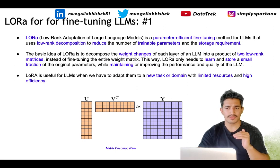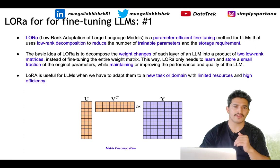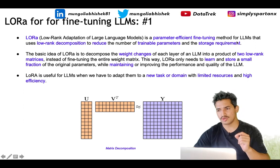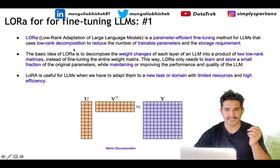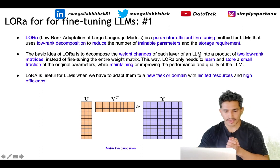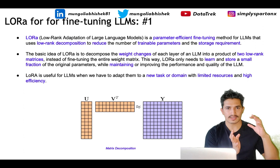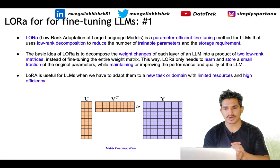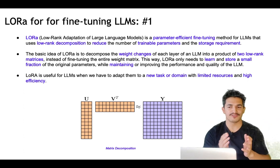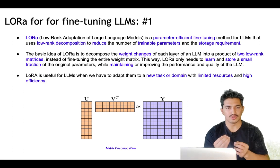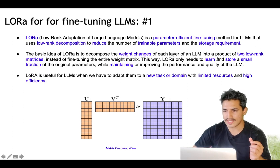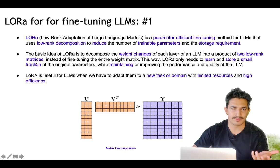The next technique becoming very popular is LoRA-based fine-tuning of LLMs. LoRA stands for Low-Rank Adaptation of large language models. It's a parameter-efficient fine-tuning method that uses low-rank matrix decomposition to reduce the number of trainable parameters and storage requirements — so we can fine-tune on machines with less computation. The basic idea of LoRA is to decompose the weight changes of each layer of an LLM into the product of two low-rank matrices, like a typical matrix decomposition.